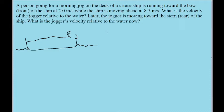So there are two different things that this problem is asking. The first part is where the jogger is running towards the front of the ship. If the jogger is moving towards the front of the ship, then that means that they are moving with the ship along the water.